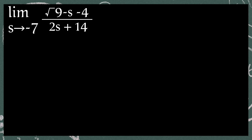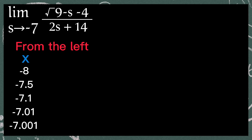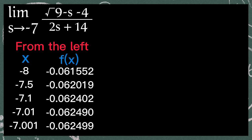So the limit of the square root of 9 minus s, minus 4, all over 2s plus 14, as s approaches negative 7 from the left. We will get the values of x which are negative 8, negative 7.5, negative 7.1, negative 7.01, and negative 7.001. Once we substitute each value: for negative 8 we get negative 0.061552; for negative 7.5, negative 0.062019; for negative 7.1, negative 0.062401; for negative 7.01, negative 0.062490.